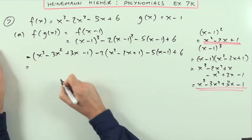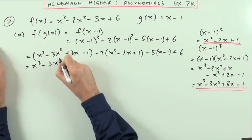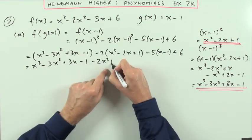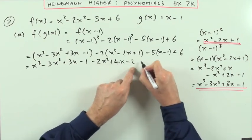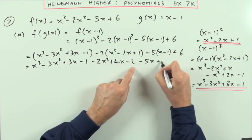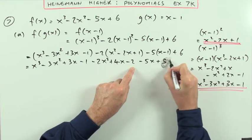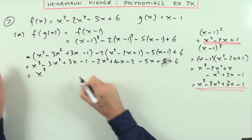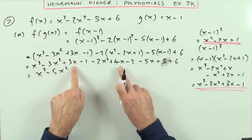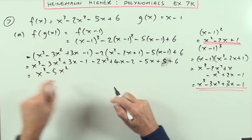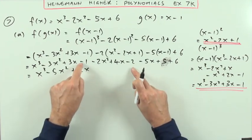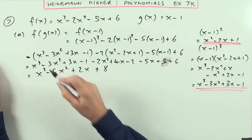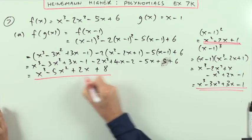Now multiply that lot out. So x cubed minus 3x squared plus 3x minus 1 minus 2x squared plus 4x minus 2 minus 5x plus 5 plus 6. Almost there. x cubed minus 5x squared. How many x's have we got here? We've got 7, so it's only plus 2x. Numbers, we've got take away 3 plus 6 is 3 and 5 is 8 for the first part. So f of g of x should come to this.